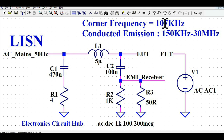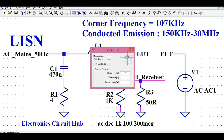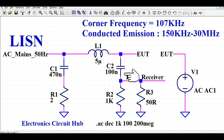C1 and L1 are designed to meet the corner frequency of 107 kHz. I have changed R1 to 2 ohms. To stabilize the output network, I chose C2 and R2 as 100 µF and 1 kΩ — you can choose any values as long as you achieve 50-ohm output impedance. R1 is used to damp the resonance of the LC filter.